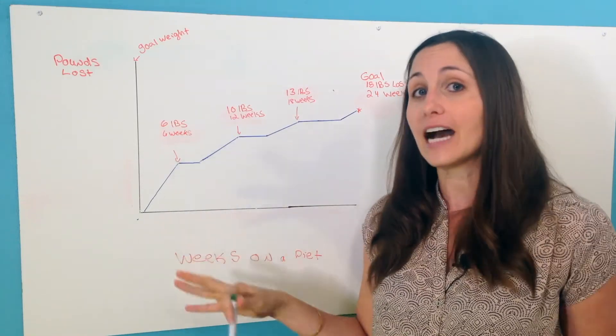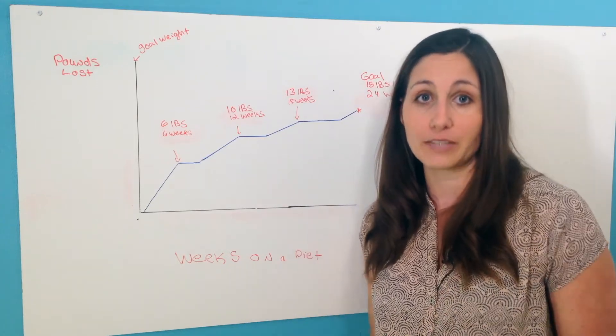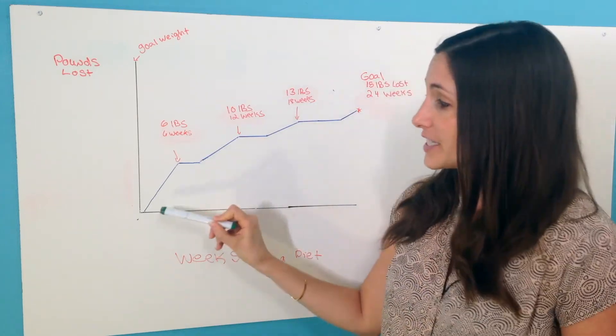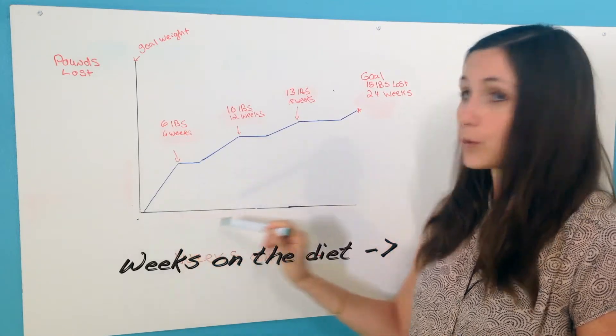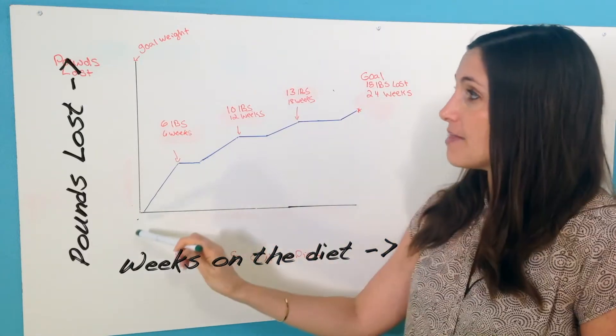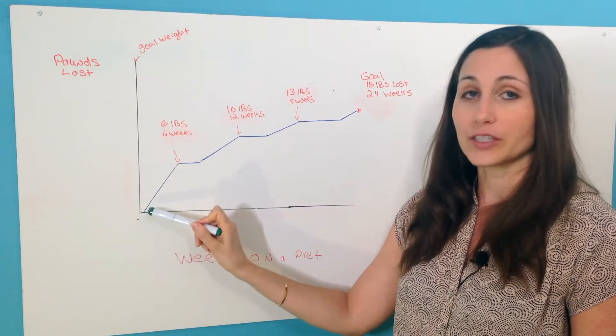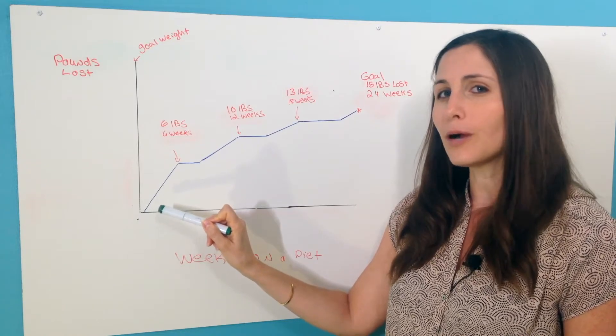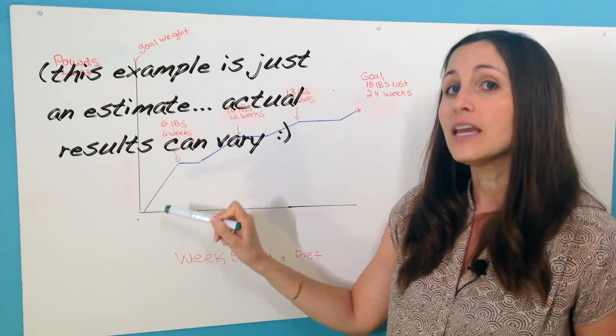So when most people start with weight loss, with any kind of diet - usually sort of a trend or a fad diet, a set meal plan with a set of food rules - you're going to see a nice clip of pounds lost. So if this is weeks you've been on a diet and this is pounds lost right here at zero at the starting point, over the first six weeks you're probably going to lose about one pound per week. You'll be really motivated and your body will respond quickly, so you'll zip and you'll lose those six pounds.